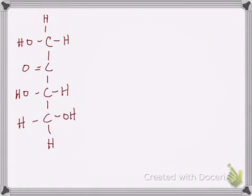One important thing to be able to recognize with sugars is to determine whether the carbons of the sugar are chiral. This is important because you'll eventually want to use this ability to determine things about stereoisomers — like is it a D or an L version, is it an enantiomer, a diastereomer, an epimer. Those terms require you to know if there are chiral carbons and which ones are chiral. There are links below to other videos on those topics.